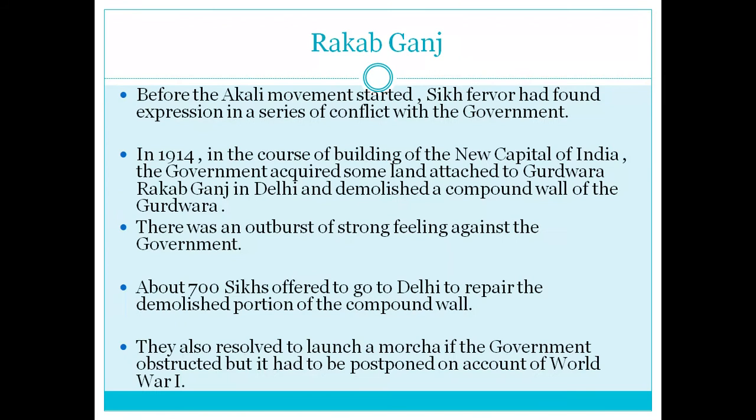The first episode is Rakab Ganj. Before the Akali Movement or the Gurdwara Reform Movement started, the Sikhs found themselves in a conflict with the government. In 1914, during the construction of the Viceregal Lodge in the new capital of Delhi, the government acquired some land attached to Gurdwara Rakab Ganj in Delhi and demolished a compound wall of the Gurdwara in order to increase the area of the Viceregal Lodge.